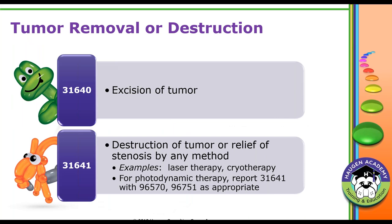For tumor removal or destruction, there are two codes. Code 31640 is for excision of a tumor — done with or without fluoroscopic guidance using the bronchoscope to grasp and excise the tumor. Code 31641 is for destruction, where a laser or cryoprobe is passed through a channel in the bronchoscope to destroy the tumor or areas of stenosis. If computer-assisted image-guided navigation is used, add-on code 31627 can be reported in addition. If photodynamic therapy is performed, code 31641 can be reported with 96570 or 96571 for the photodynamic therapy.